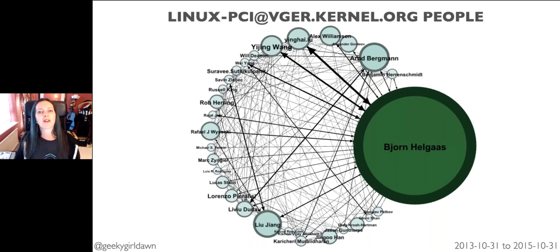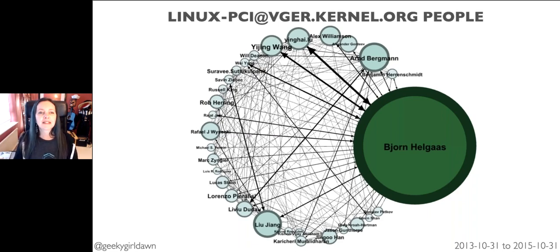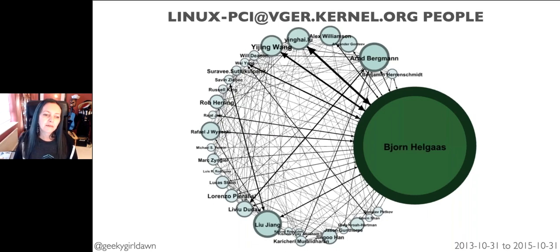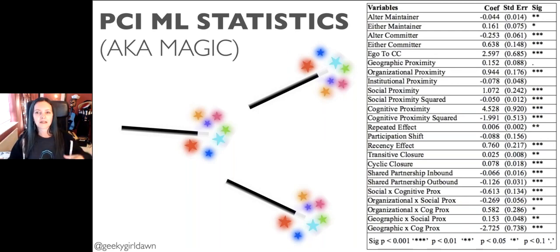This is the image of the people who are involved — again, only the most prolific responders showing. The larger, darker circles are people who reply or are replied to the most on the list, with darker arrows indicating more email exchanges between people. Looking at the most prolific responders explains some of what we saw on the previous company slide. Bjorn stands out as the maintainer for the PCI subsystem — he works at Google, which shows some of why Google is so prominent. You also see people like Arndt Bergmann from Linaro, Alex Williamson from Red Hat, Yinghai Liu from Oracle, along with Liu Zhang and Raphael Wysocki from Intel. For the PCI list, I also did quite a bit of statistical modeling, specifically a conditional logistic regression model — I'm not going to go into details here, but I'll move on to what all of this means.